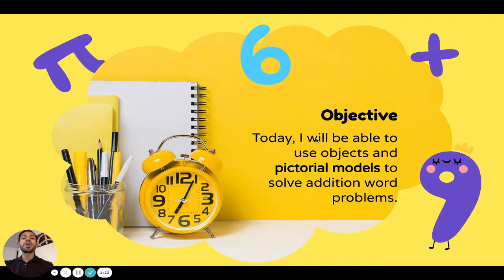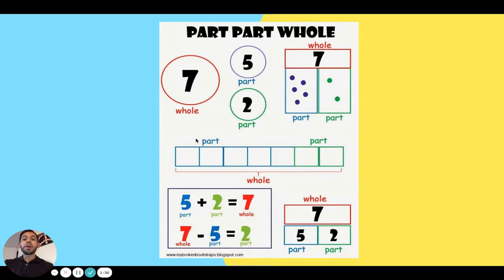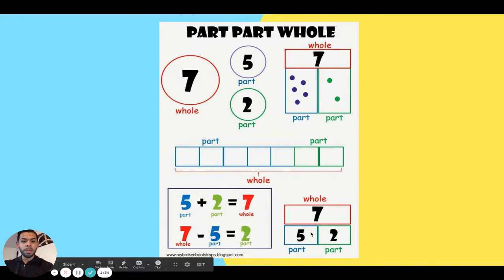All right, my friends, we're going to be doing a lot of this today. This is today's objective for math: today I will be able to use objects and pictorial models to solve addition word problems. We're going to be working with our friend Part-Part-Whole today. Part-Part-Whole is a model where you can put your whole at the top or the bottom, and then you have your two parts that equal the whole.